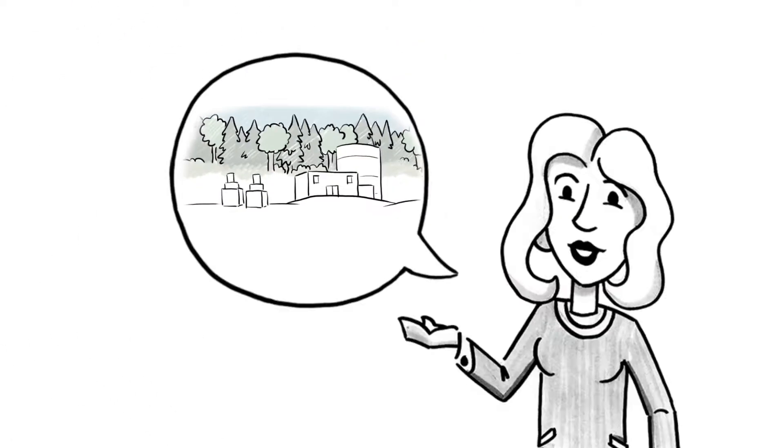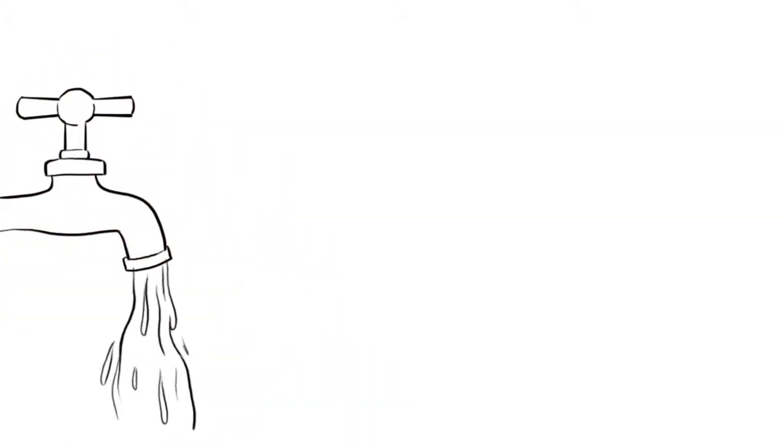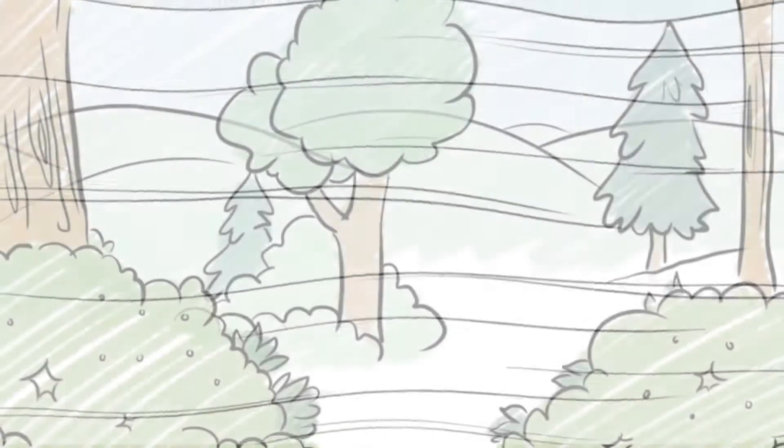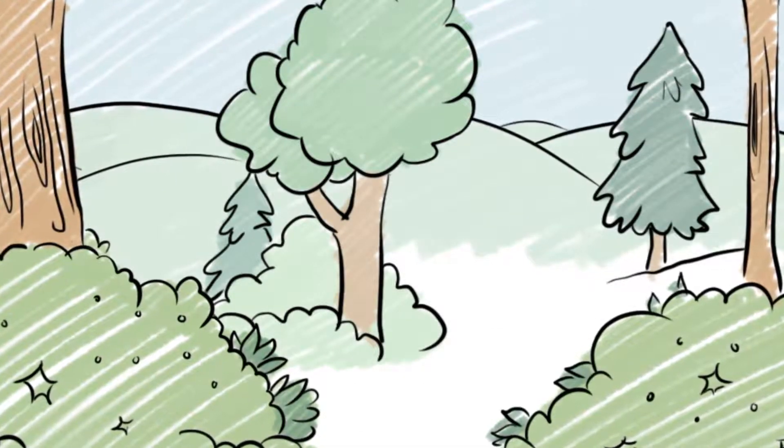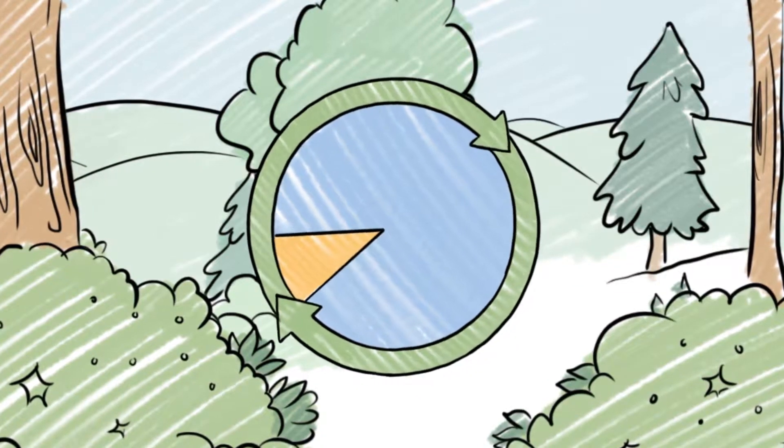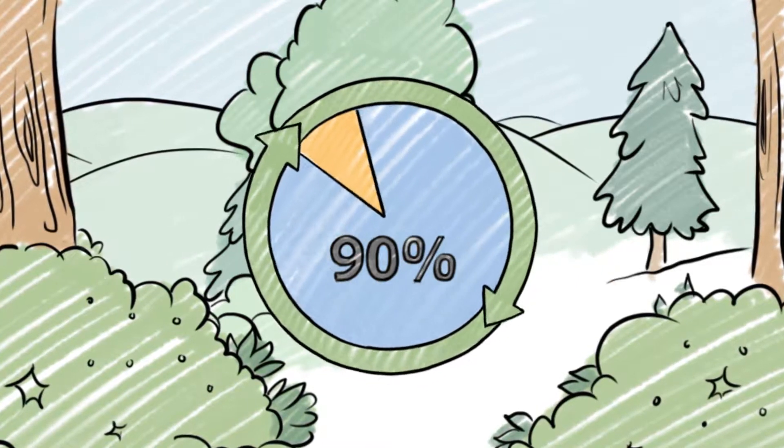Rita explains that in situ development has different impacts than mining and they have to be managed carefully. One impact is water use. These kinds of in situ oil sands operations use a lot of water to create steam. The AER makes sure that water is used efficiently by requiring operators to recycle as much water as they can. On average, operators recycle up to 90 percent of the water they use.